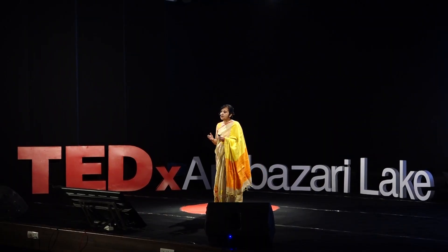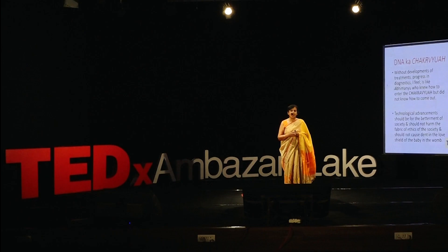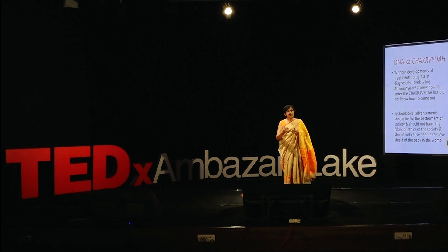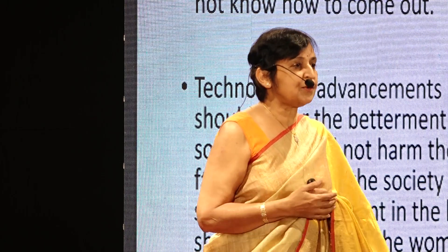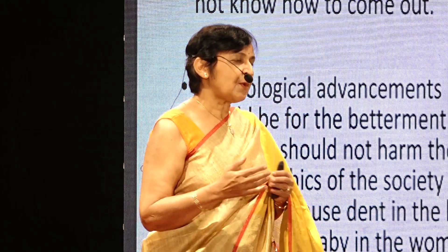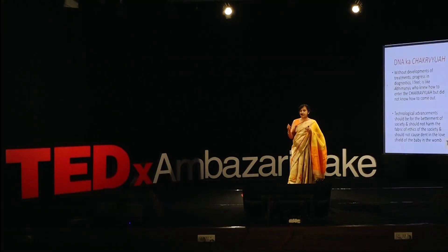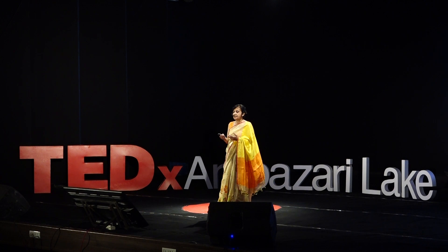The diagnostic power has increased tremendously. Treatments are improving — like gene therapy for sickle cell disease, hemophilia, and spinal muscular atrophy — but the costs are like 16 crores and more. The pace of identifying treatments is not fast enough. This gives parents high control over their babies' genome in the womb, and they want to decide which type of disorder calls for termination — something like Abhimanyu knowing how to enter the chakra but unable to come out. Families may even terminate pregnancies for variants of unknown significance.